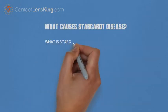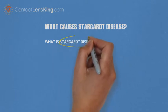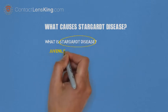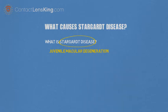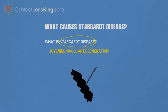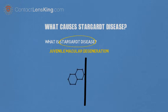In our previous video titled 'What is Stargardt Disease,' we explained that this disease is a juvenile version of macular degeneration, where a genetic mutation causes protein to block nutrients from being delivered to, and waste removed from, the macula.